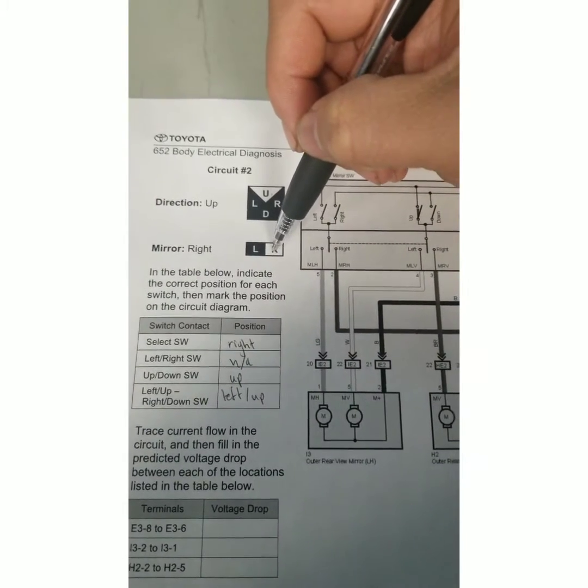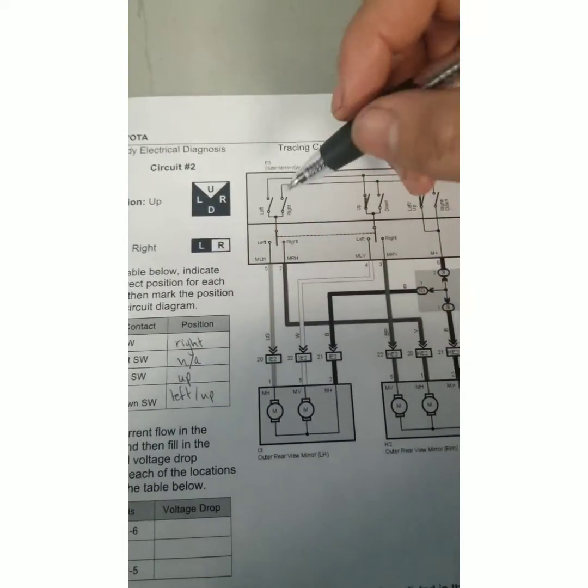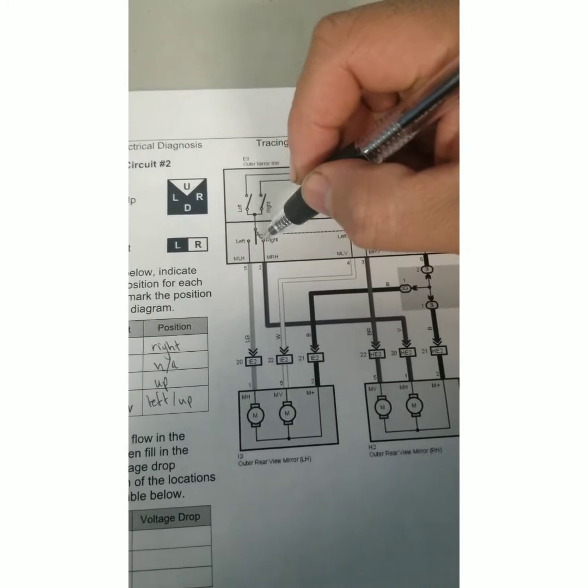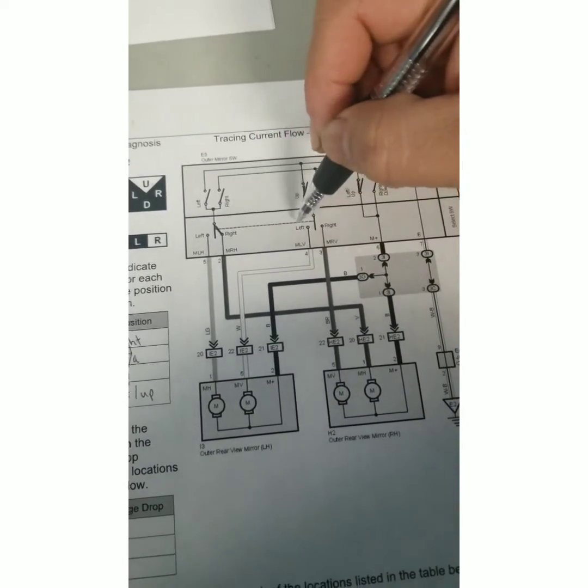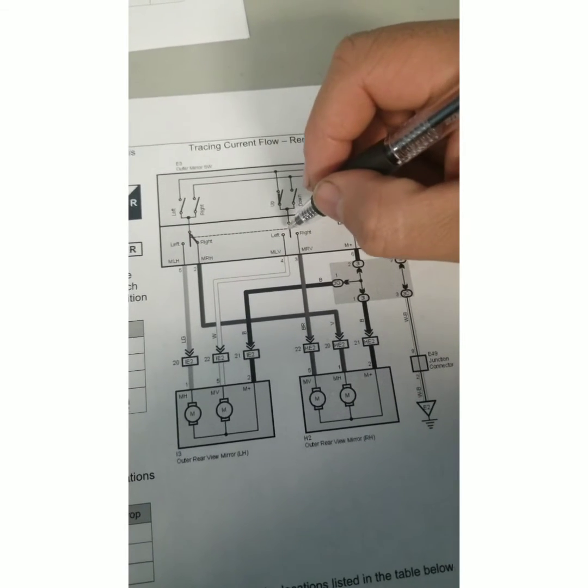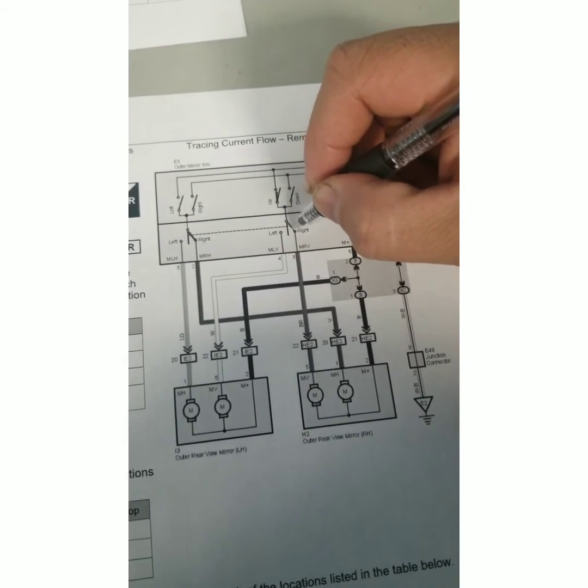On this diagram we're going to be working with the right mirror. So we'll switch these switches. This little connector here, this dotted line, just means these two switches are connected. They both move at the same time.